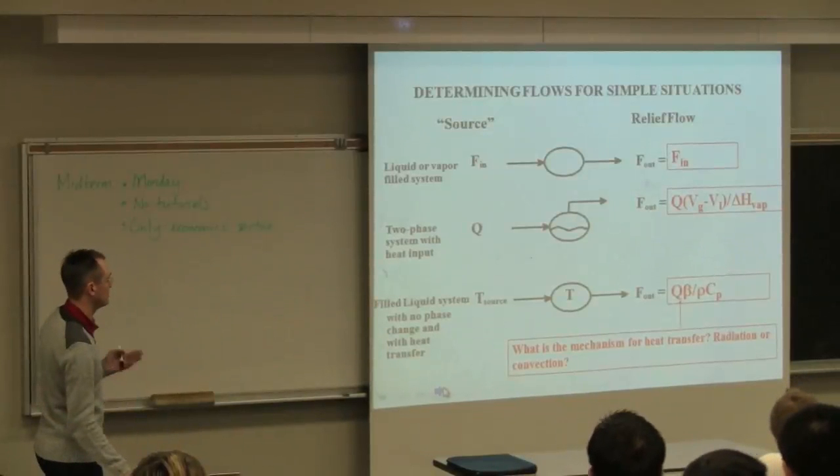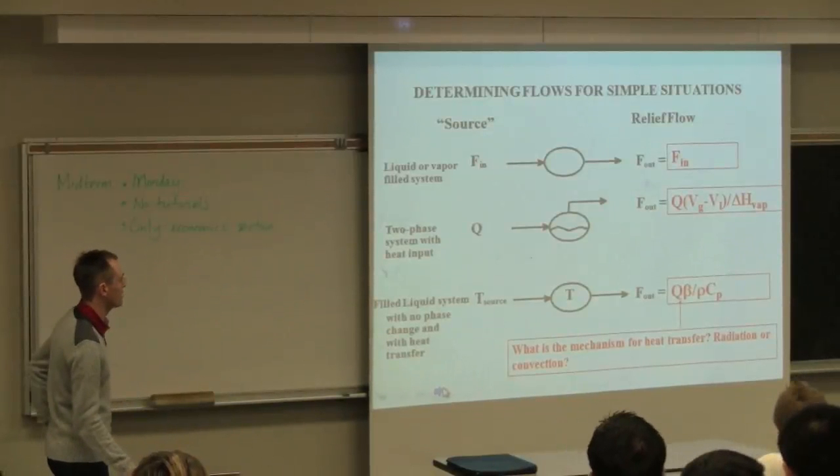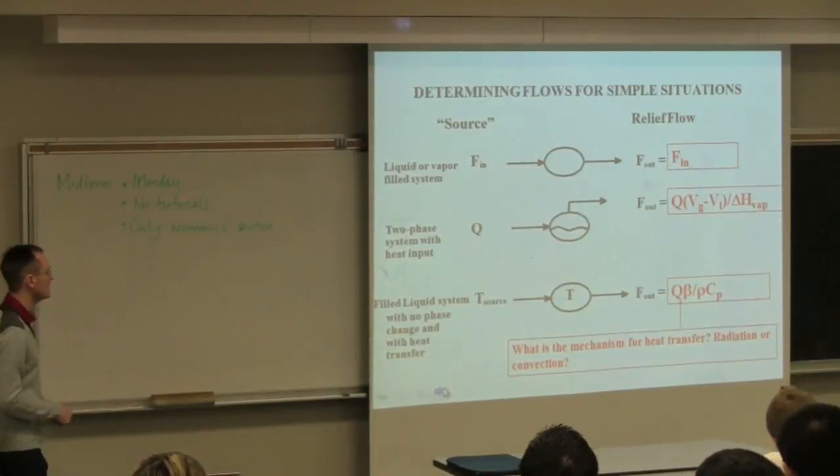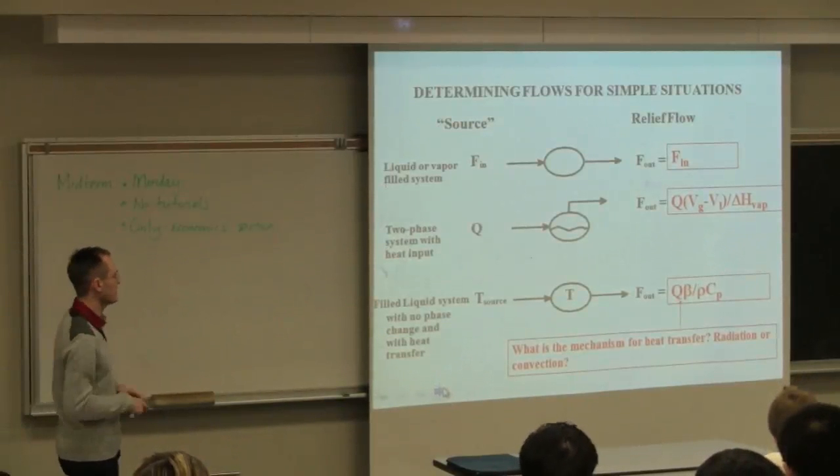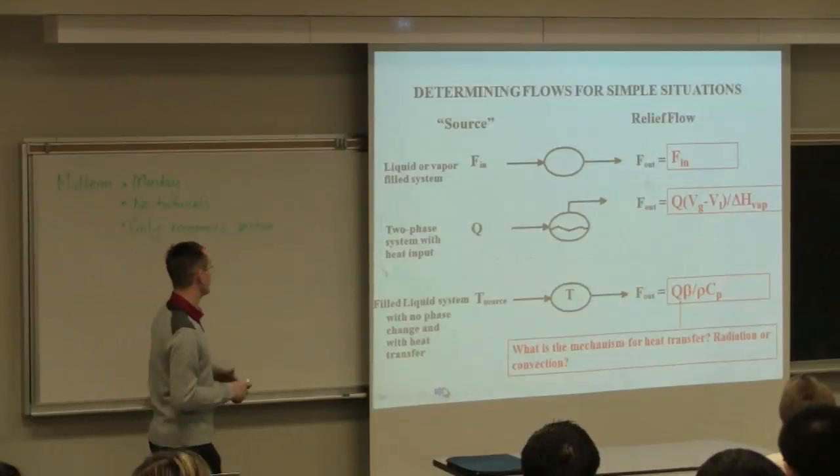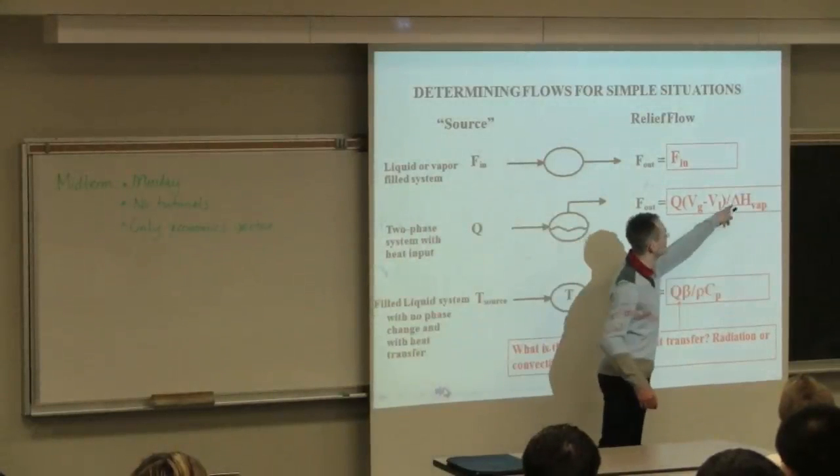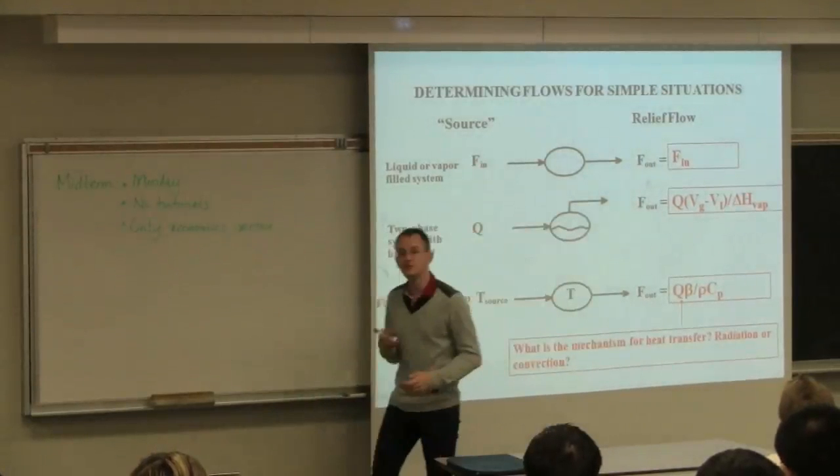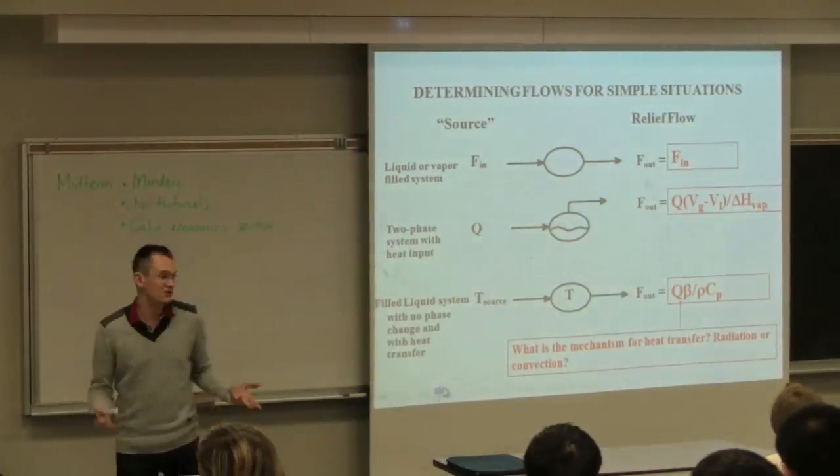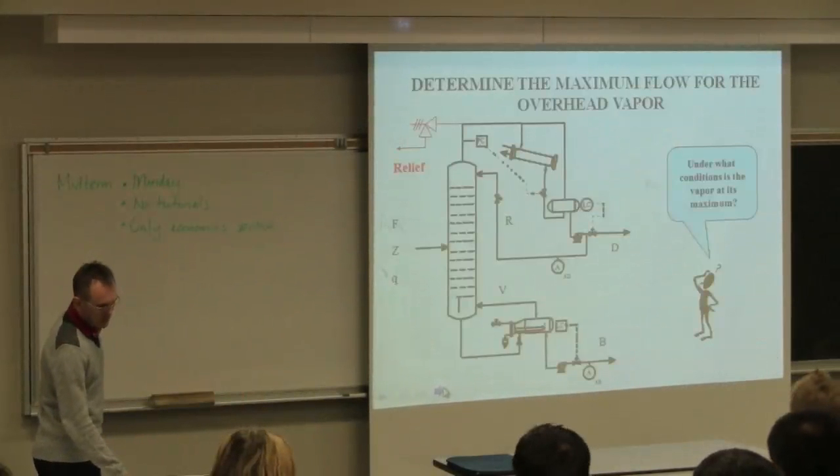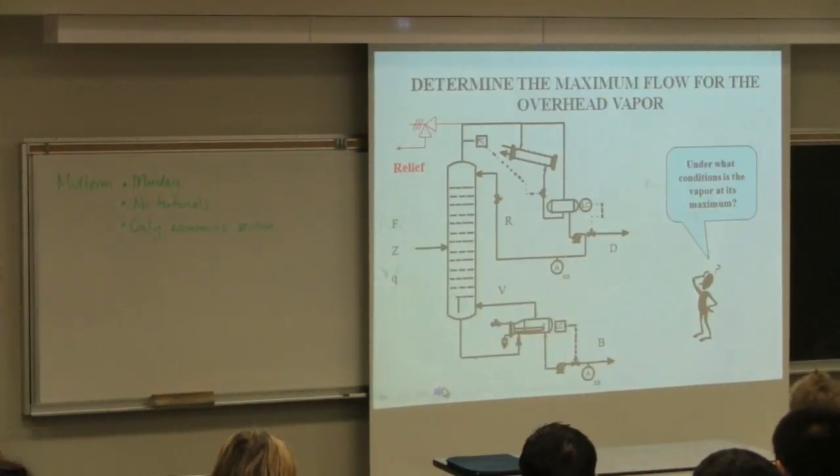For systems that happen to be two phases, so here we've got liquid and a gas phase above it and there's heat input, for example from a fire or heat around it, and when that heat input gets too high, we need to apply relief. The expected flow out is a function of the heat of vaporization, how much heat is being consumed by boiling liquid to gas.